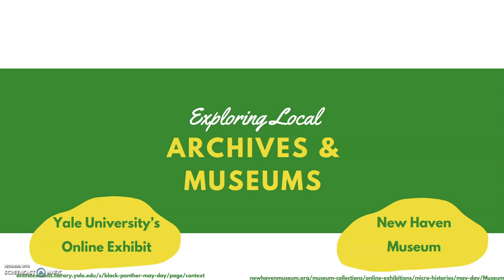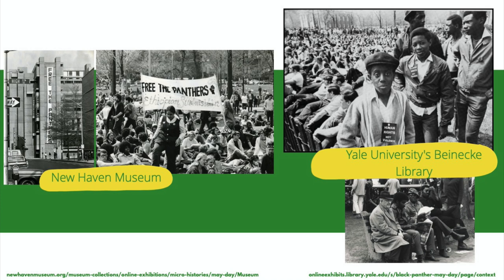I know I can start in two places. I want to check out Yale University's online exhibit on the New Haven 9 and on the May Day protests, and on the subsequent trials of the New Haven 9 in 1970. But I also want to check out the New Haven Museum, which was originally founded as the New Haven Historical Society. Both will have important photographs and other primary sources that are going to help me figure out what happened during the May Day protests in New Haven. And once I go to examine those local archives and museums, I might find sources like this — from the New Haven Museum, an image of the Free the Panthers protest that happened on the New Haven Green.